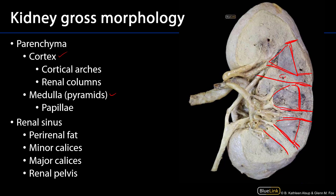Columns and arches are the two portions of the cortex, and nephrons exist between the cortex and the medulla in both the arches and the columns. More of the renal corpuscles and proximal and distal convoluted tubules will be found in the cortex, whereas more of the nephron loops and collecting ducts will be found within the medulla.